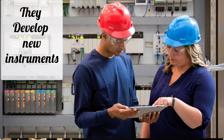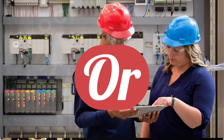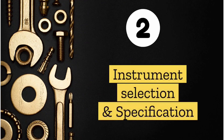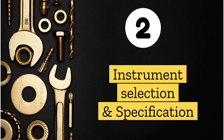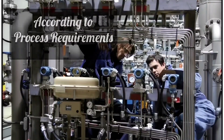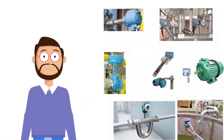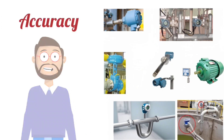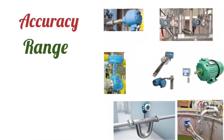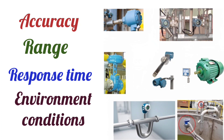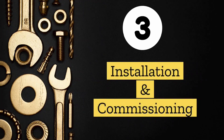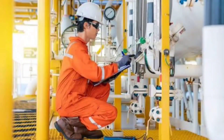They develop new instruments or modify existing instruments. The second responsibility is instrument selection and specification. According to the process requirements, they select the appropriate instruments and sensors. Instrumentation engineers evaluate different types of instruments keeping in mind accuracy, range, response time, and environmental conditions.